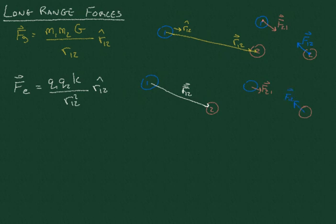This is in the case where q1, q2 is less than 0, if they have opposite charges. If they had like charges, then we would see that the force of 2 on 1 would be pushing it away, and also the force of 1 on 2 would be pushing object 2 away.